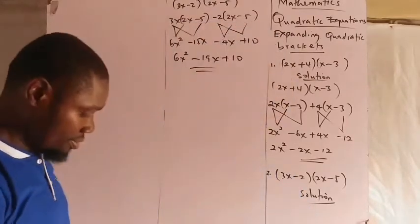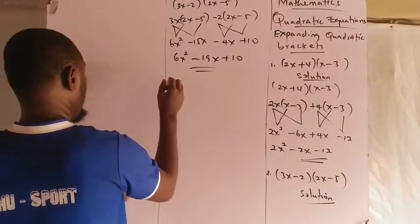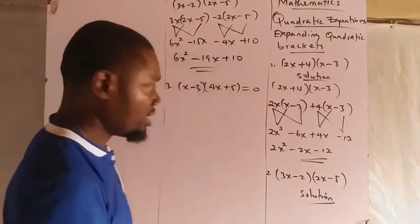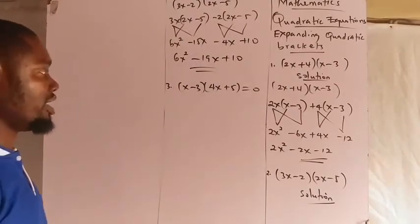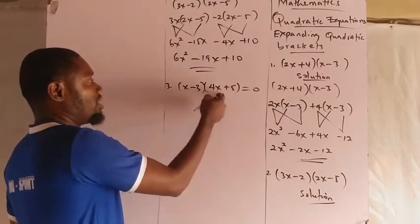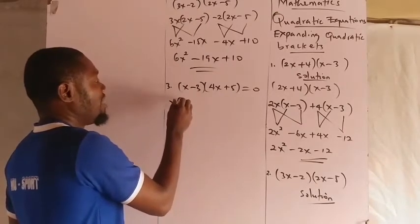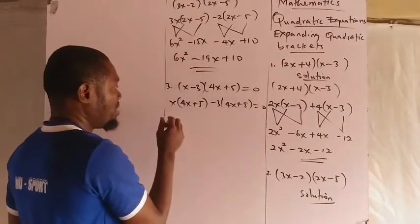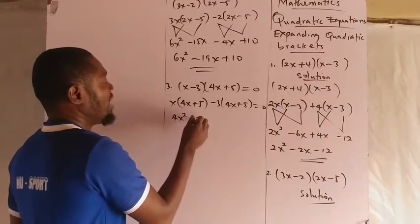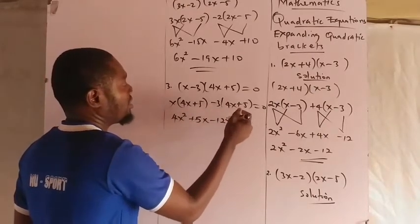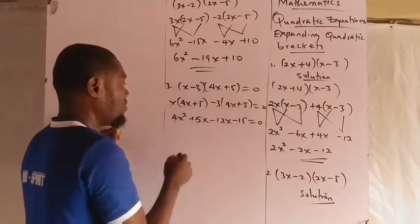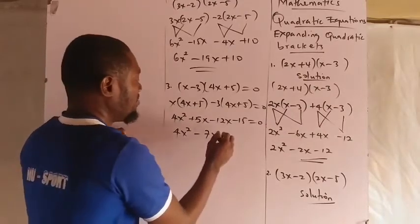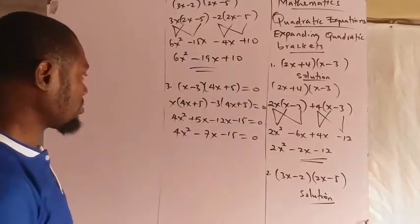Let's consider one more problem. Number 3: (x − 3) into (4x + 5) = 0. The same approach is used. Picking x as the first multiplier: x into (4x + 5), then minus 3 into (4x + 5) equals 0. That gives 4x squared + 5x − 12x − 15 = 0. This is a quadratic equation.